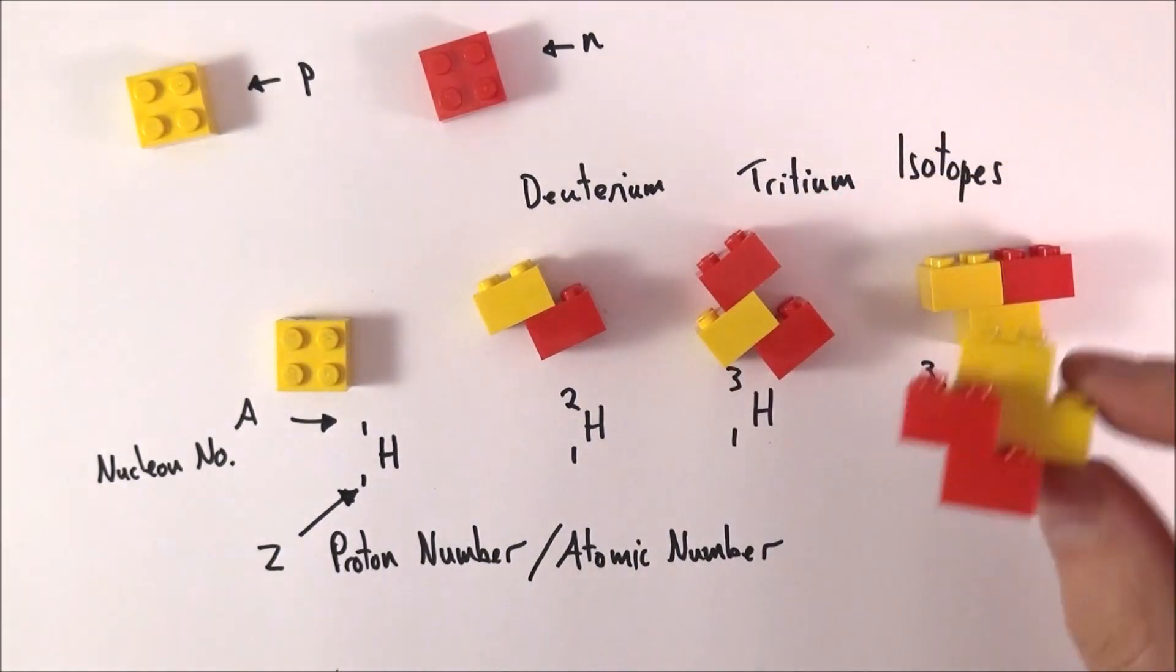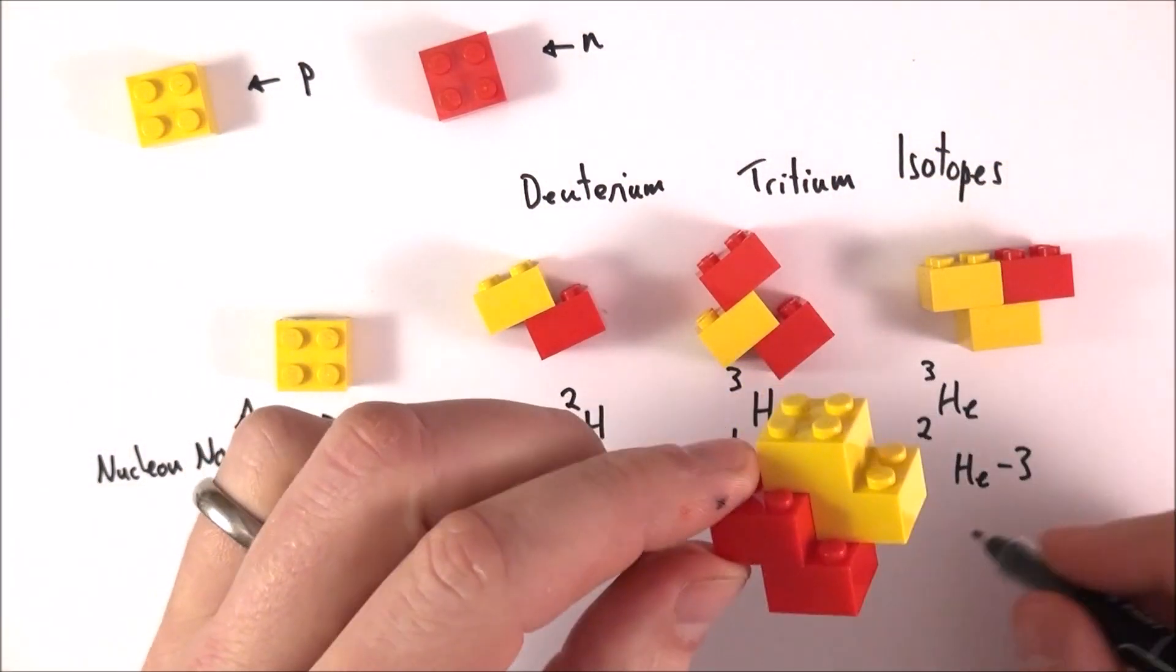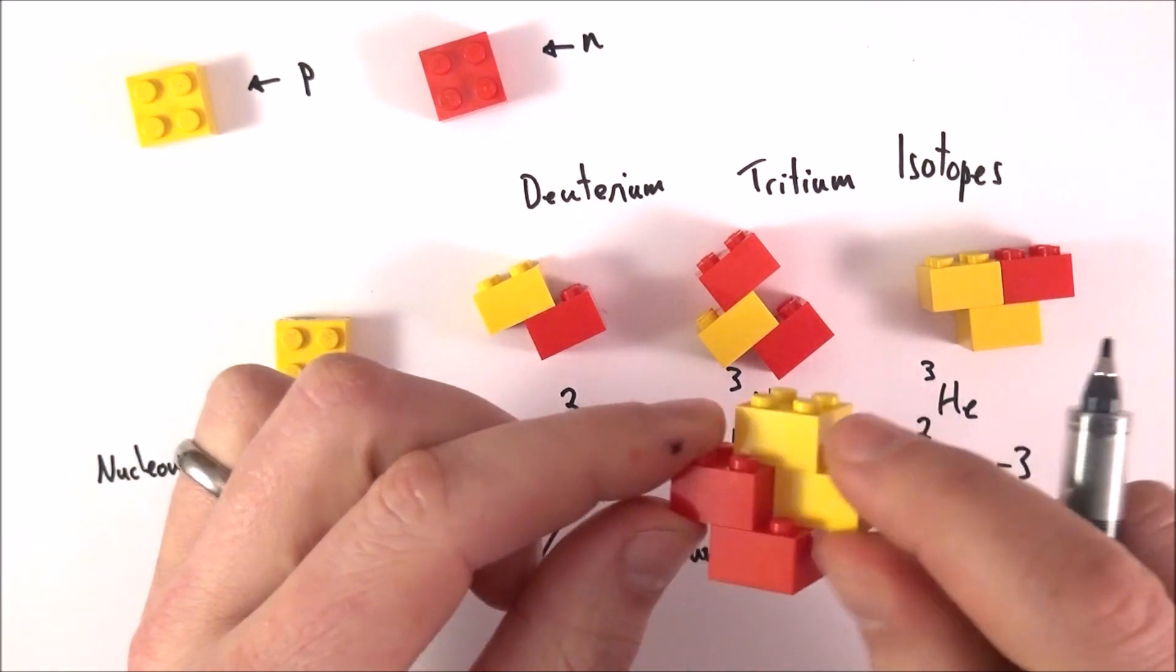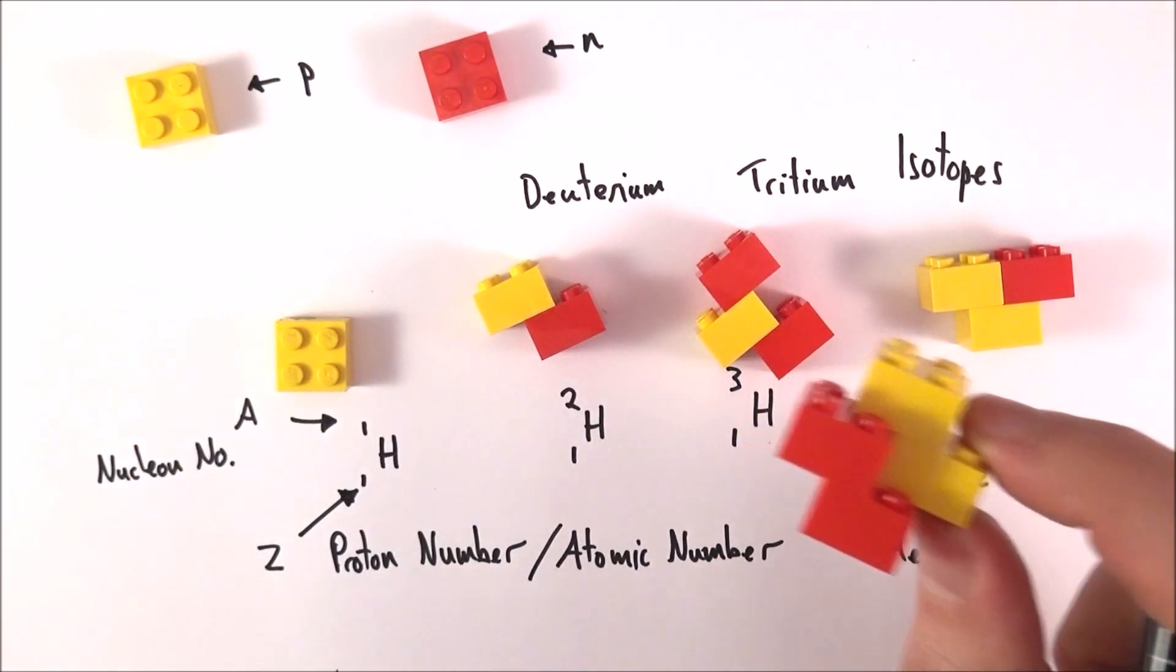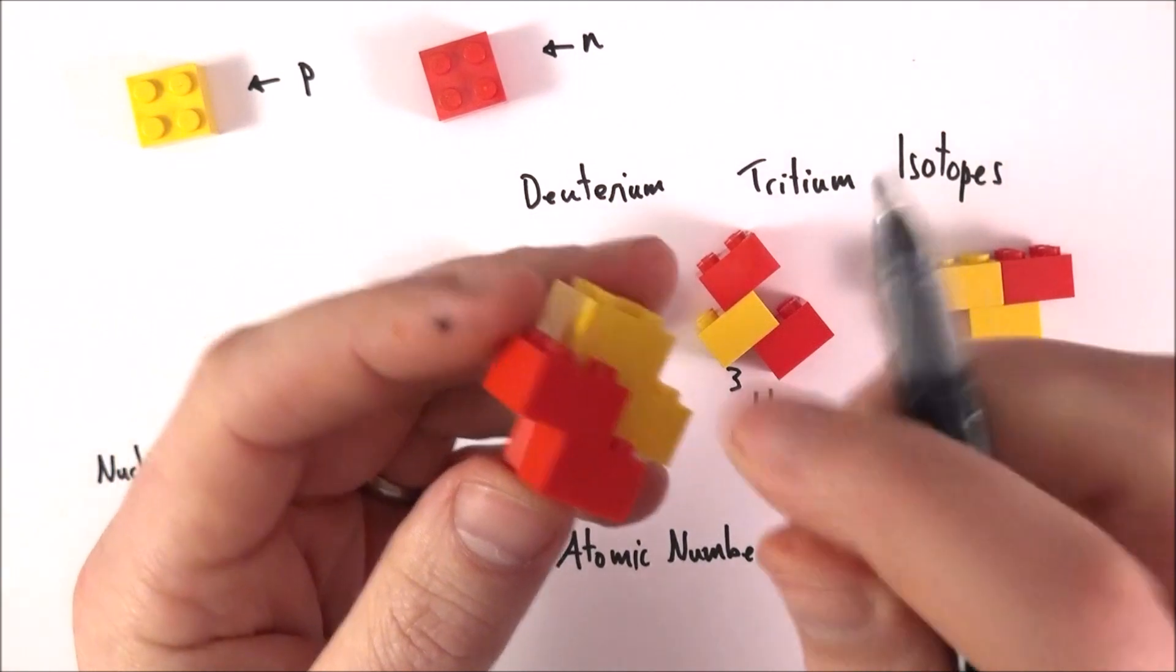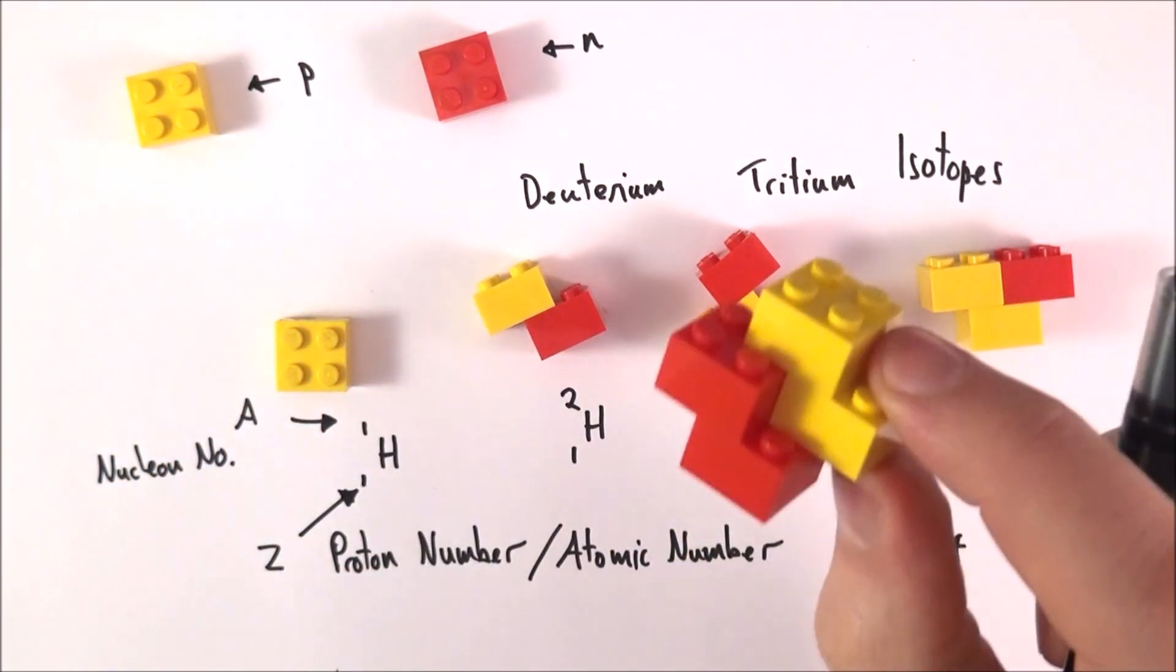This one here, because it has four things inside, is helium-4. This is the kind of thing that you get in party balloons, and this nucleus of a helium atom is also our alpha radiation.